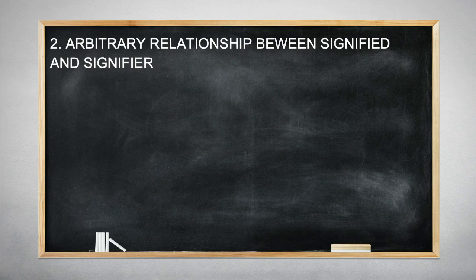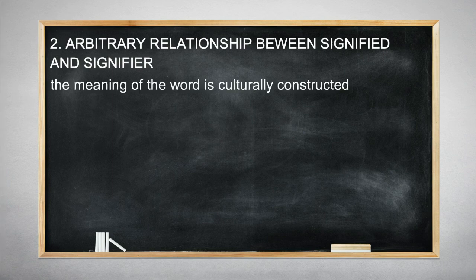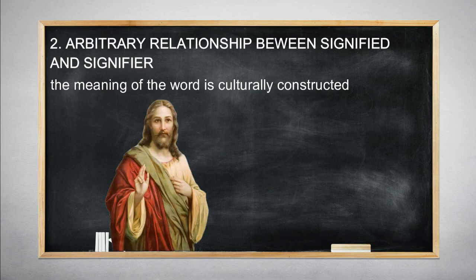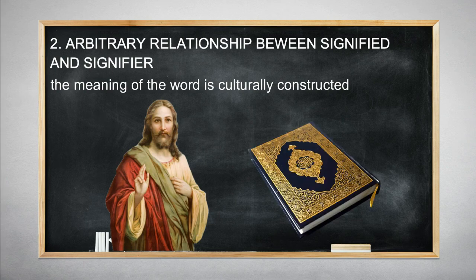Two: arbitrary relationship between signified and signifier. According to Saussure, the meaning of the word is culturally constructed. For instance, your idea of God may have a different mental concept than others. If you're a Christian, Jesus Christ is connected to the word God. If you're a Muslim, Allah is connected to the word God. The word God can mean differently for everybody. That is what Saussure meant by arbitrariness in language — there is no fixed sign.